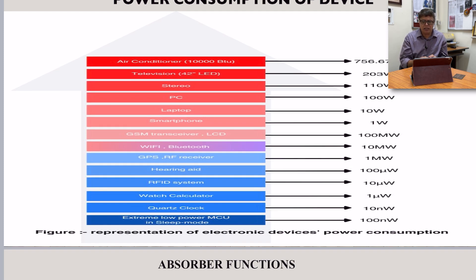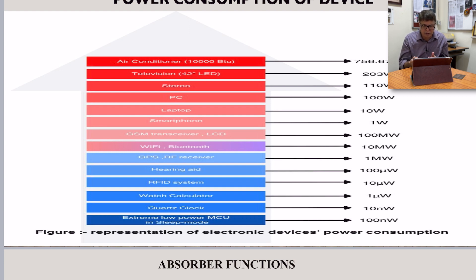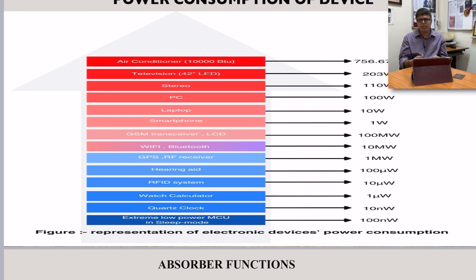Coming back to this slide, there are many devices available for daily use that operate at very low power — even at nanowatt levels. A microcontroller unit (MCU) in sleep mode consumes 100 nanowatts. A quartz clock consumes 10 nanowatts. A watch and calculator consume 1 microwatt. An RFID system consumes 10 microwatts. Hearing aids consume 100 microwatts. A GPS RF receiver consumes 1 milliwatt. Various devices like Wi-Fi, Bluetooth, and Fitbit require very low voltage, so no external battery is required — these devices can operate from ambient energy harvested using radio waves.